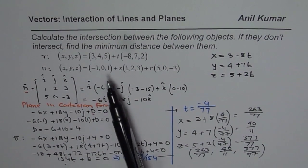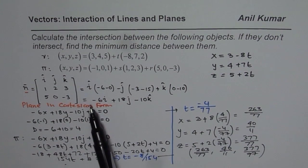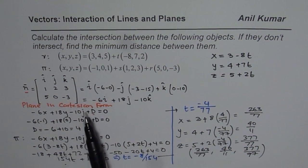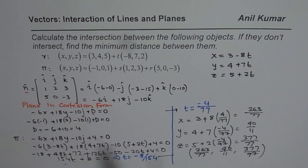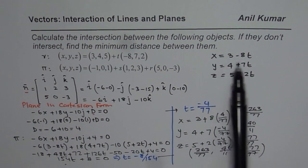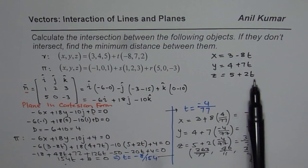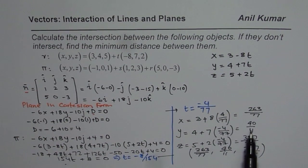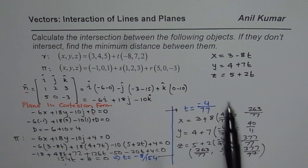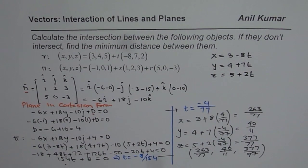In summary: the first step is to write the vector equation of the plane in Cartesian form. Then substitute the parametric line values and find parameter t. Once you know t, find the point on the line. That is the method to adopt in such cases.